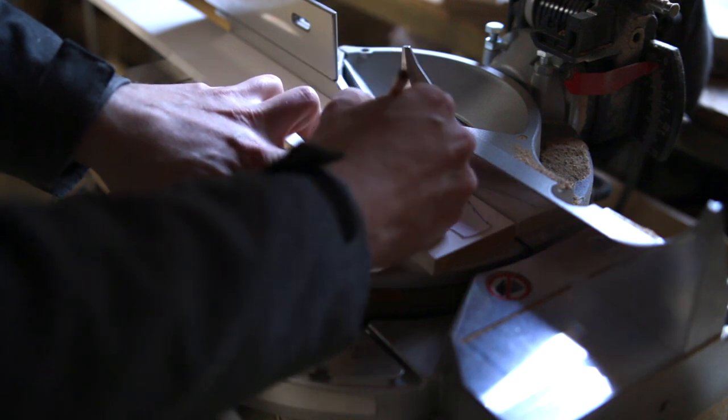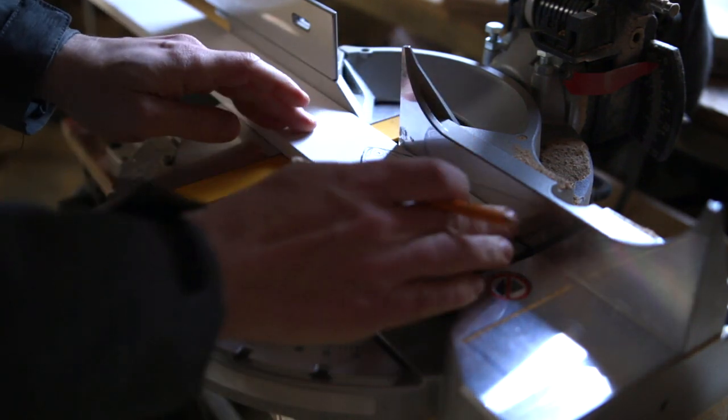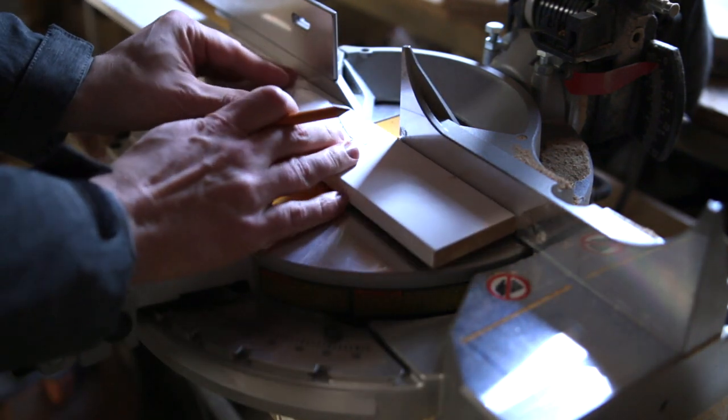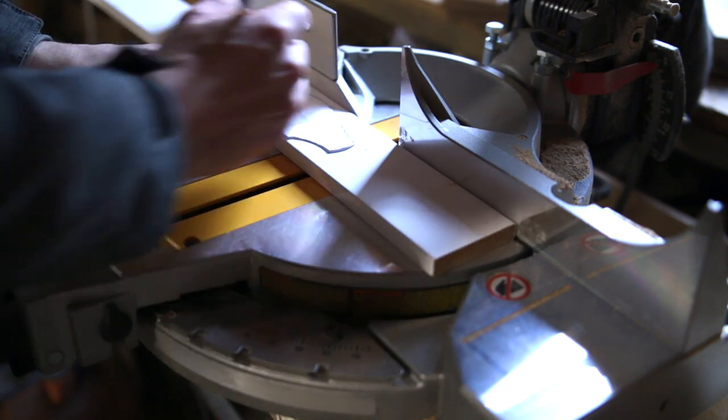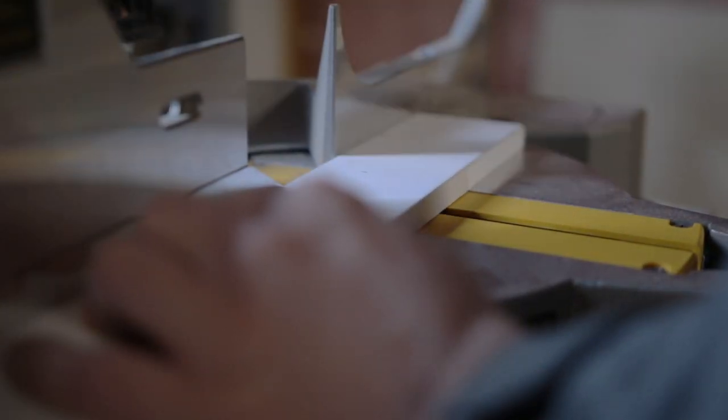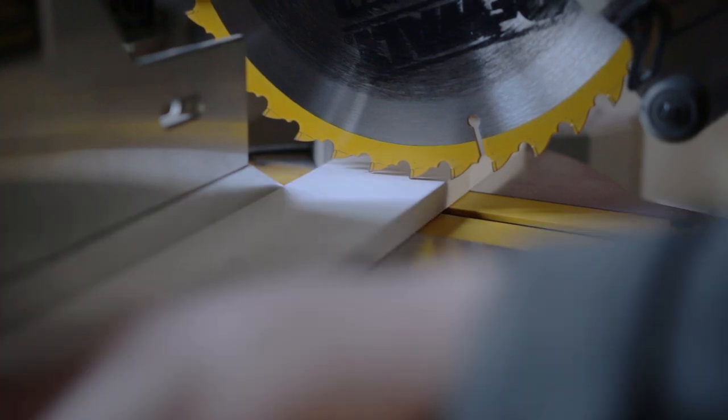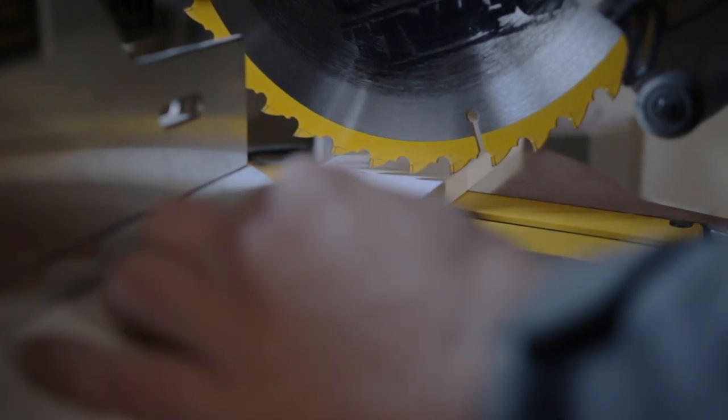In this one we're going to be making a crankbait using a kind of unusual material for lure making. I'm talking about this mystery board I'm cutting right now. It's not really a mystery, it's MDF, which stands for medium density fiberboard, basically an engineered wood.